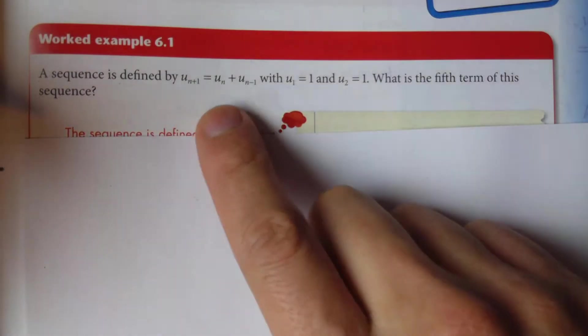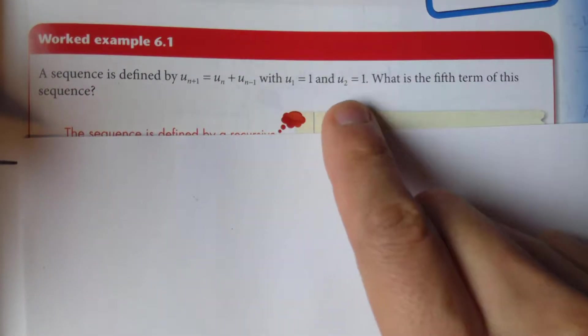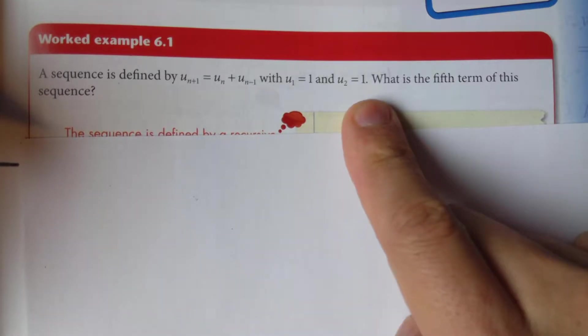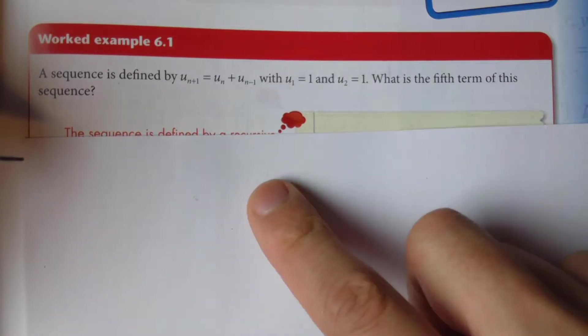A sequence is defined by this with u1 equals 1 and u2 equals 1. What is the fifth term of the sequence?